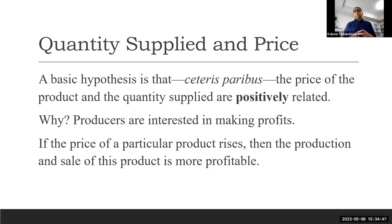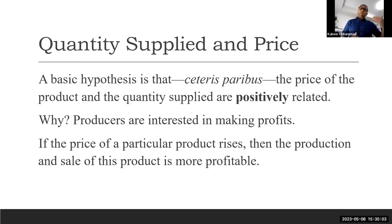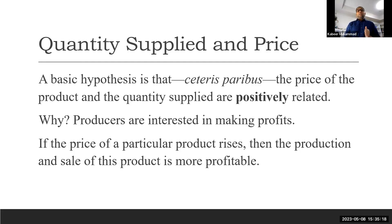We see there is a positive or direct relationship. The reason for this is that producers are interested in making profit. When they see that prices are increasing, they want to sell more. An increase in price motivates producers to increase the supply and sell more, and by this way they can make more profit. If the price of a particular product rises, then production and sale of this product is more profitable. When we present this idea of quantity supplied and price with the help of a table or data, that's what we call a supply schedule.